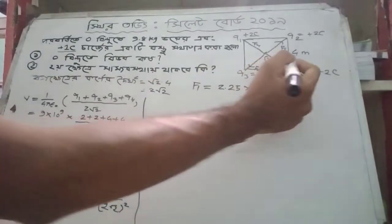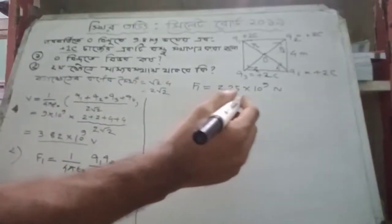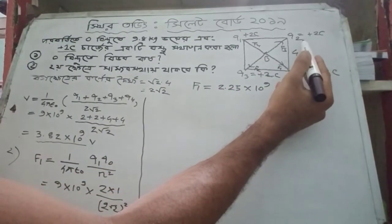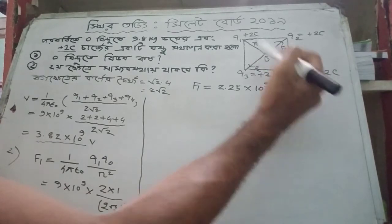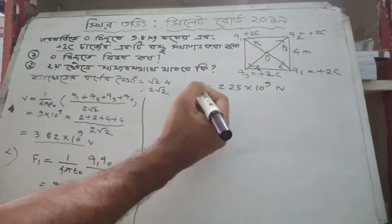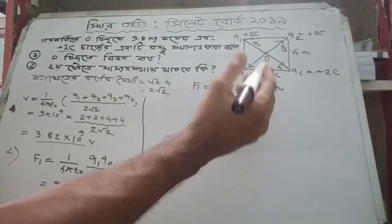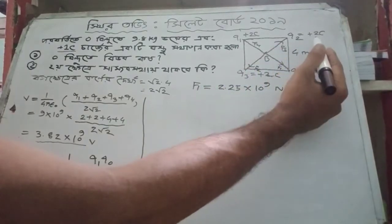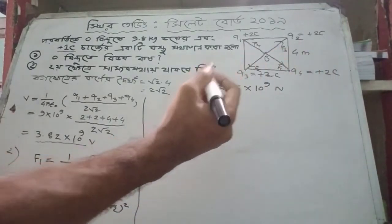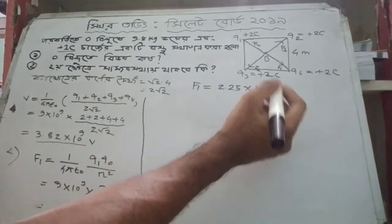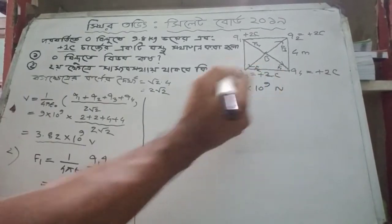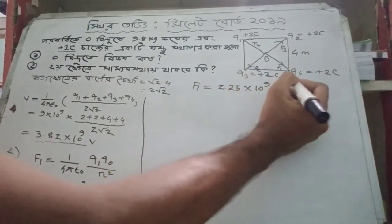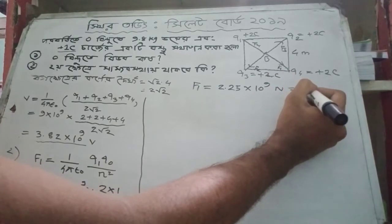Now we have the Q2 charge direction. We will find F2. F2 is equal to the same form — F2 = (1/4πε₀) × (q1 × q0) / r².